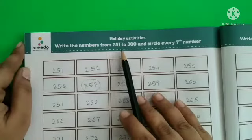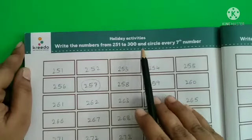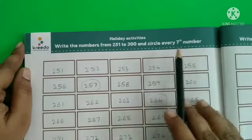Write the numbers from 251 to 300 and circle every 7th number.